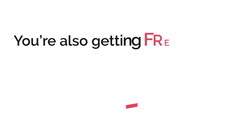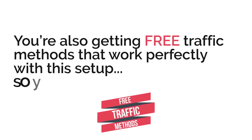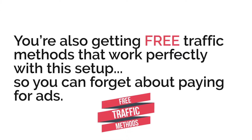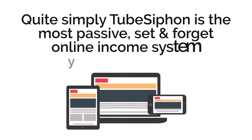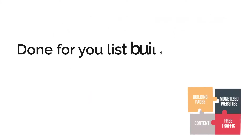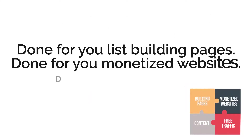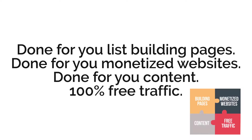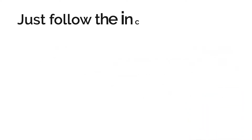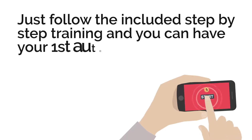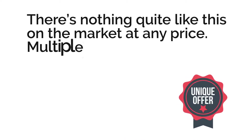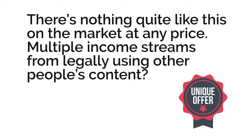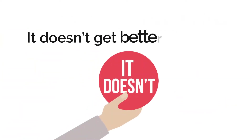You're also getting free traffic methods that work perfectly with this setup, so you can forget about paying for ads. Quite simply, Tube Siphon is the most passive set and forget online income system you've ever seen — Dumpview list building pages, Dumpview monetized websites, Dumpview content, 100% free traffic. Just follow the included step-by-step training and you can have your first automated profit factory up and running in under 30 minutes. There's nothing quite like this on the market at any price.